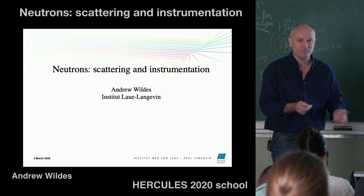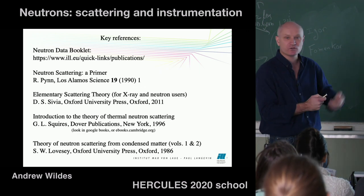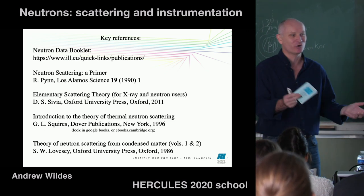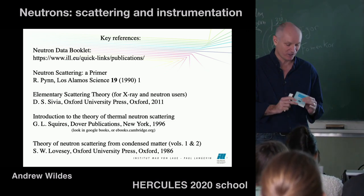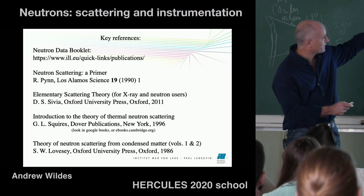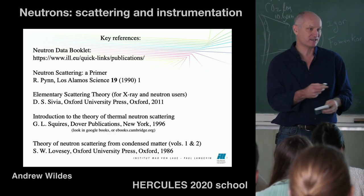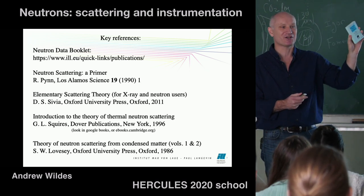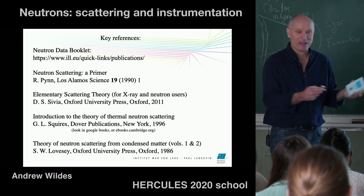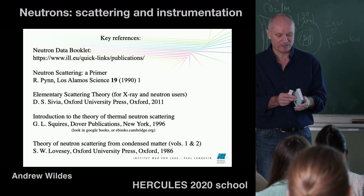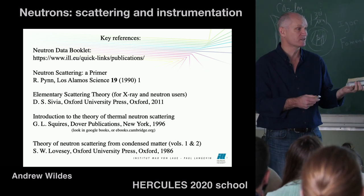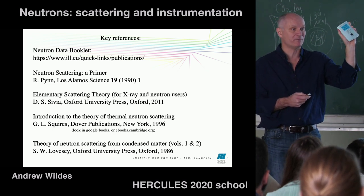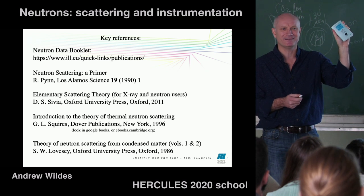Most of what I'm going to talk about is summarized in these key references. I brought a few along to show you. So that's the neutron data booklet — they go in order of complexity. This one was produced by the ILL about 20 years ago. It's perhaps a little out of date, but it still has a reasonable introduction to neutron scattering. You can download it, or get a hard copy, but that'll cost you about 30 US dollars.